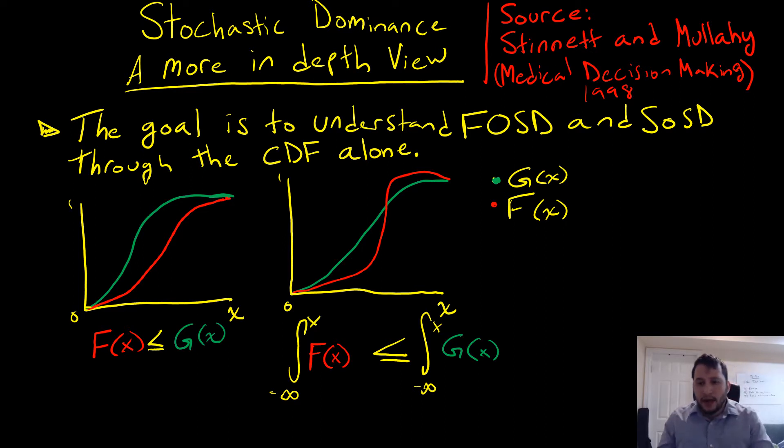I'm getting inspiration for this video from a paper written by Aaron Sennett and John Mully in the Journal of Medical Decision Making. The paper is called Net Health Benefits: A New Framework for Analysis of Uncertainty in Cost Effectiveness Analysis. They use a very simplified version of stochastic dominance, but it does the job.